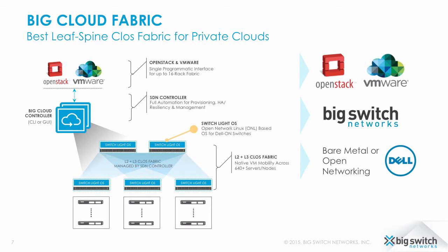Clos architectures are highly desirable in modern data centers, from small to mega-scale, for their resiliency and ability to quickly and easily scale out without scaling up. Our topology is built using open Ethernet switches and 10-gig or 40-gig links. The switches run the same Broadcom Trident 2 chipset found in far more expensive proprietary switches.